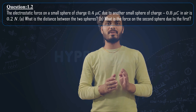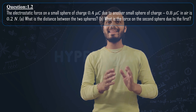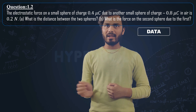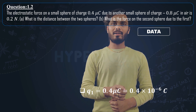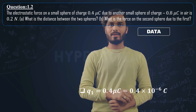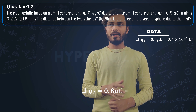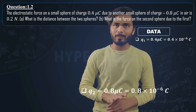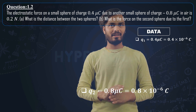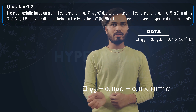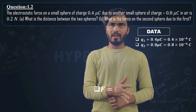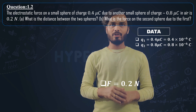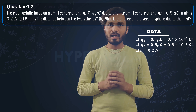The given data: q1 equals 0.4 micro coulomb, that is 0.4 cross 10 raise to minus 6 coulomb. q2 equals 0.8 micro coulomb, that is 0.8 cross 10 raise to minus 6 coulomb — this is the magnitude; the force is attractive because one is positive and one is negative. F equals 0.2 newton.